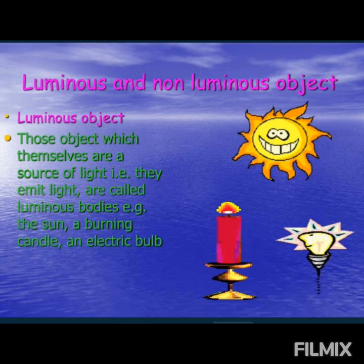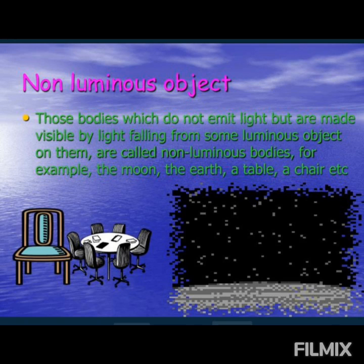Before we move ahead, in your class 6th, you must have studied about the sources of light, which are classified as luminous and non-luminous bodies. Objects like the sun and stars that emit light are called luminous bodies. Most objects like a table, chair, or the human body do not emit light — such objects are known as non-luminous bodies.